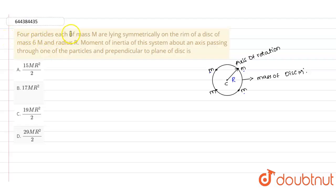It is given that four particles, each of mass M, are lying symmetrically on the rim of a disc of mass 6M.